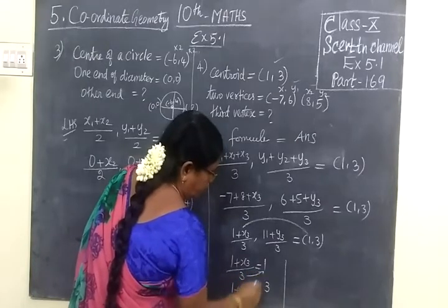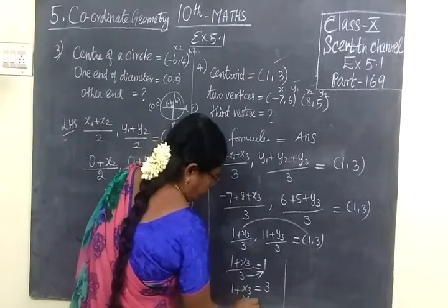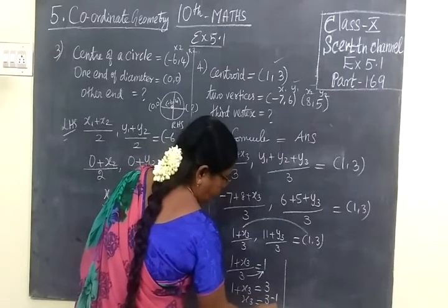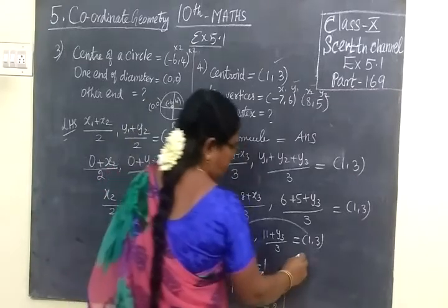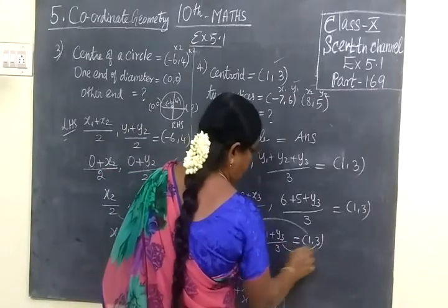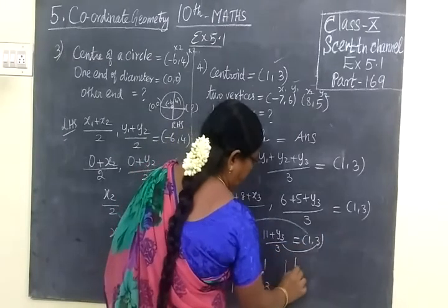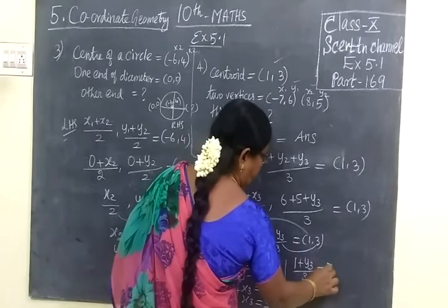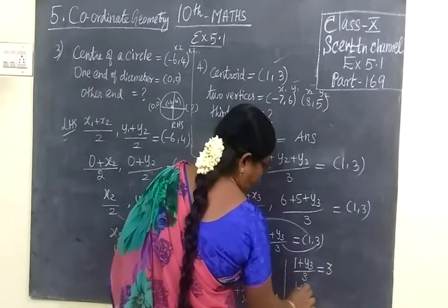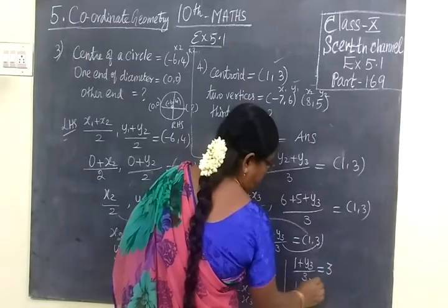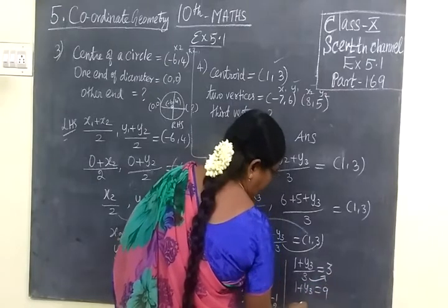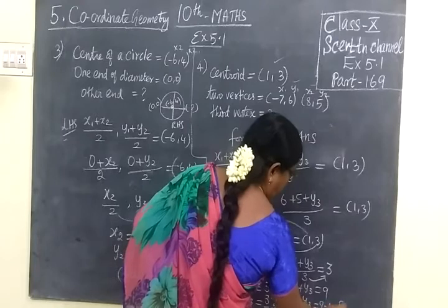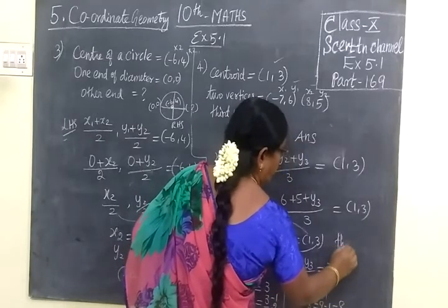3 is taking this side, then x3 equal to plus 1 on this side with the minus 1, so 3 minus 1 is 2. In the same way, y coordinate equal to 3. So 11 plus y3 by 3 equal to 3. So 11 plus y3 equal to 3 into 3, which is 9. Therefore y3 equal to 9 minus 11, which is -2.